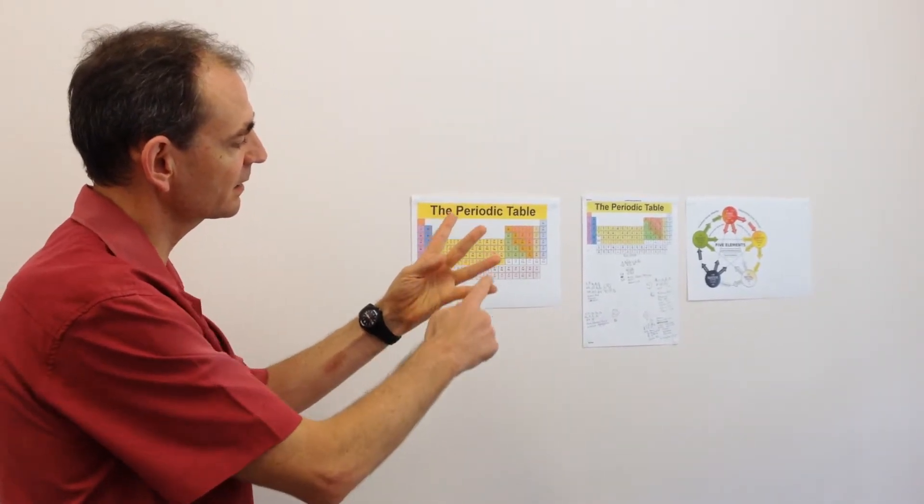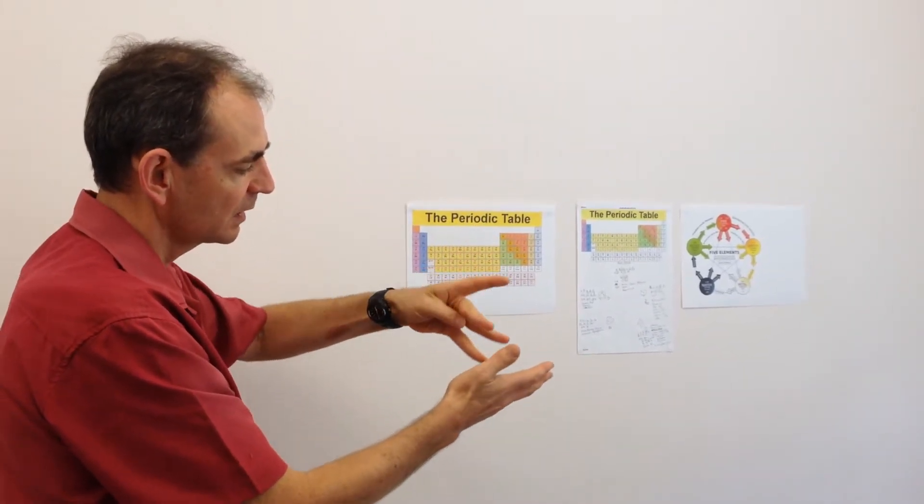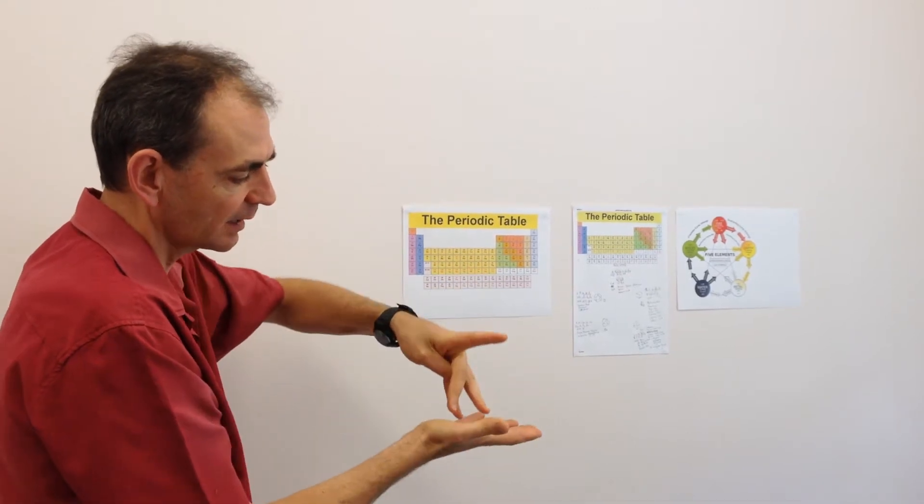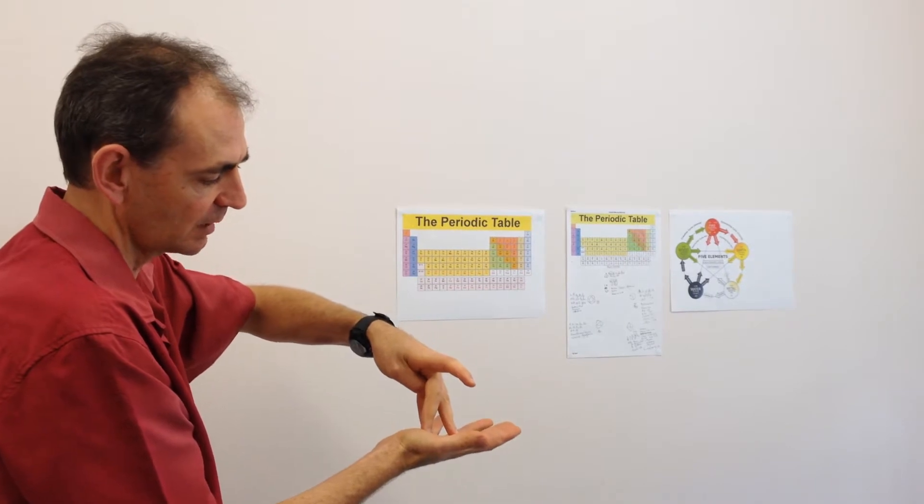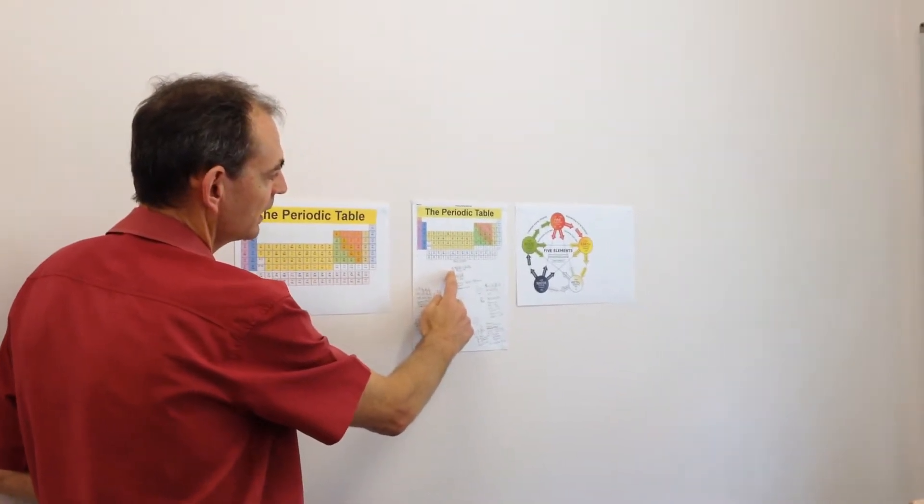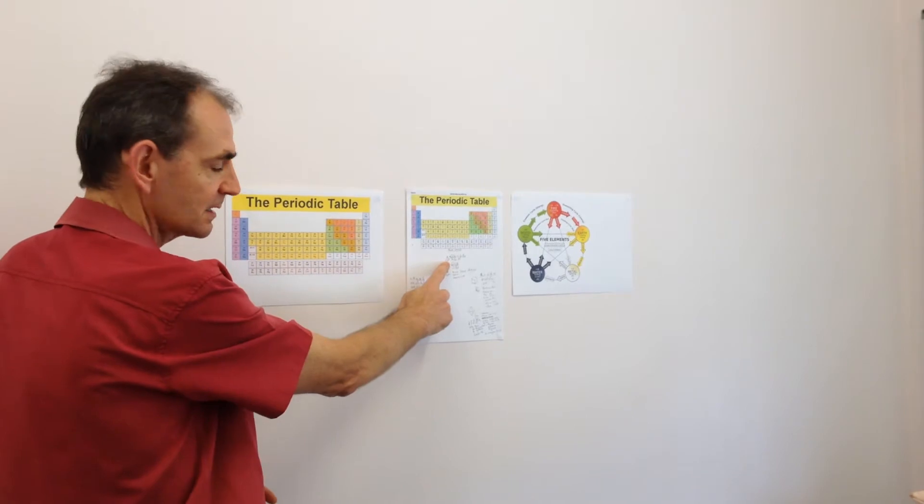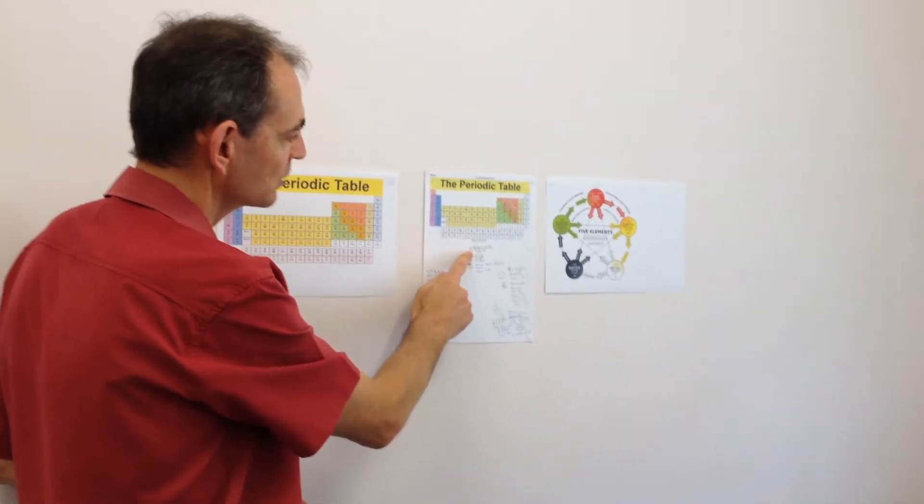So what happens is these other three forces are pulled by time into creating a tetrahedron shape. The tetrahedron shape is one of the sacred geometric shapes.